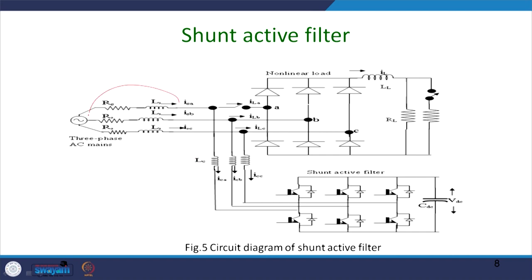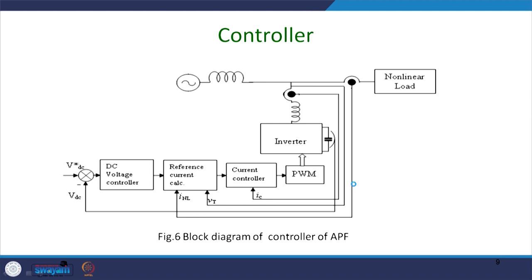Here you have a source inductance and resistance and a nonlinear load, and you may have single-phasing or load-changing operation, plus a shunt active power filter. Generally, this capacitor voltage is required to be actively maintained by a PI controller. There are two kinds of algorithms: one is the reference generation technique, which we will discuss later — that is referred to as the indirect method — and we can also have a direct method, which we will not discuss much because it has some limitations.